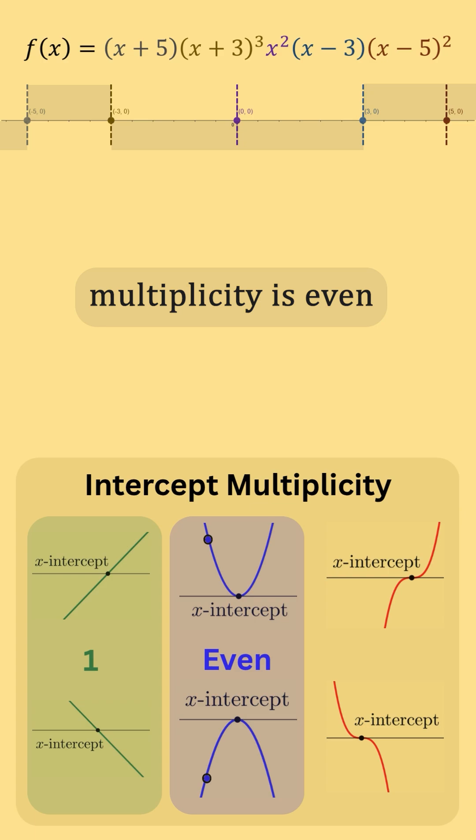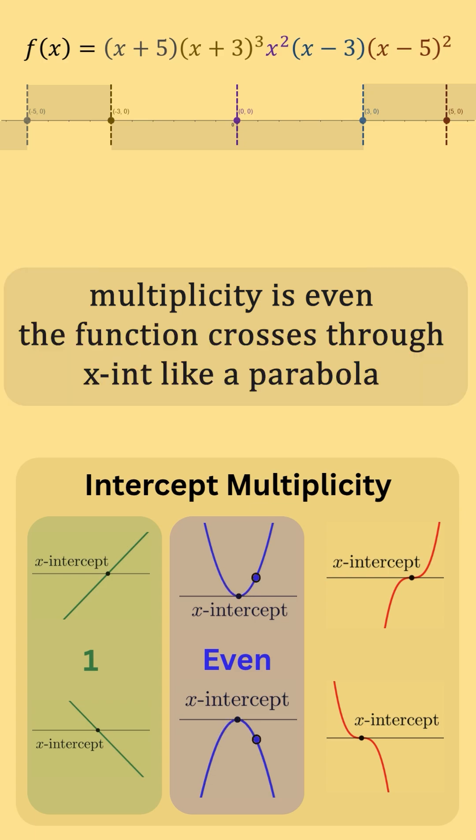If the multiplicity is even, then our function touches the x-axis and returns in the direction it came from.